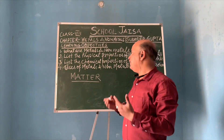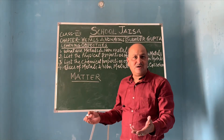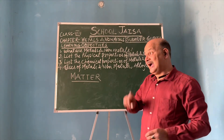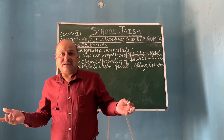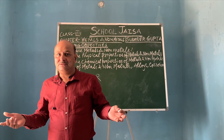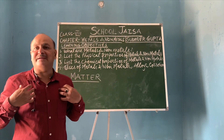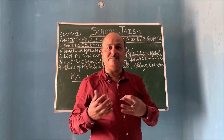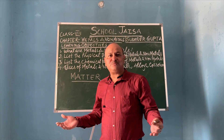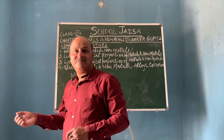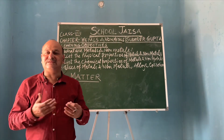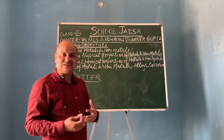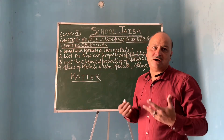If we talk about the book, when we keep the book somewhere on the table or floor, we observe that it occupies space, and when placed on a weighing machine, it has some mass. Similarly, if I say I am matter — when I sit on a chair, bed, or floor, I occupy space, and when I stand on a weighing machine, I have some mass, whether 70, 75, 80, 85, or 90. So since I fulfill these two conditions, I can be called matter.